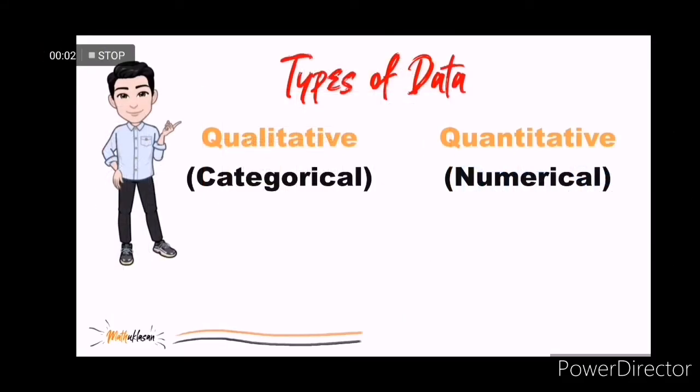Data can be classified as either qualitative or quantitative. This is very important because the statistical analysis appropriate for a particular variable depends upon whether the variable is qualitative or quantitative.